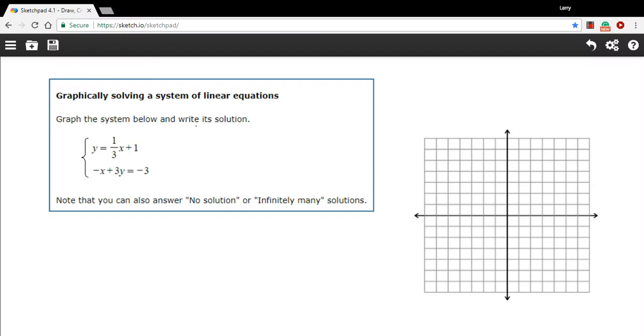In this problem, we're being asked to solve a system of linear equations by graphing the system. In this case, the system is just two linear equations, so that's two lines. And the idea here is that the solution of a system of linear equations is where the lines cross each other, where they intersect.